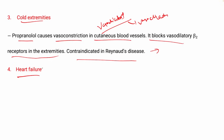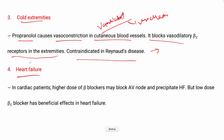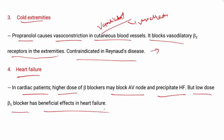In the case of heart failure, higher doses of beta blockers may block the AV node or precipitate heart failure, creating more severe conditions. However, low-dose beta blockers have a beneficial effect in heart failure. As discussed in the previous section on uses, ideally beta blockers are not suggested in heart failure, but nowadays they are used at low doses.